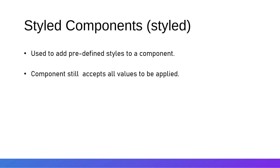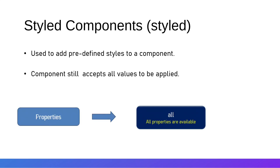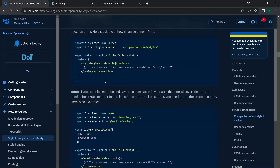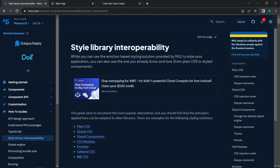All of the props are the same because we are just wrapping the component with custom styles — we haven't changed its properties. All original properties of the component are still available inside that styled component. Now we will move on to the Material UI styles package and the style library interoperability.